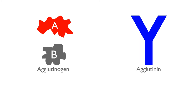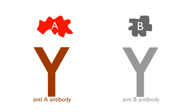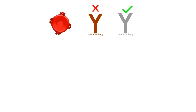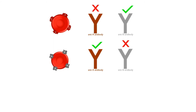Earlier in this video, I talked about agglutinogens and agglutinins. Each of the agglutinogen A and B has their corresponding NTA and NTB agglutinins. The presence of NTA and NTB in the blood depends on the presence of agglutinogen A and agglutinogen B on the red blood cell surface. When agglutinogen A is present on the red blood cell surface, the corresponding NTA antibody will be absent in the blood, but the NTB antibody will be present. When agglutinogen B is present, the corresponding NTB antibody will be absent, but NTA antibody will be present. When both of the antigens are absent, then both NTA and NTB antibodies will be present in the blood.